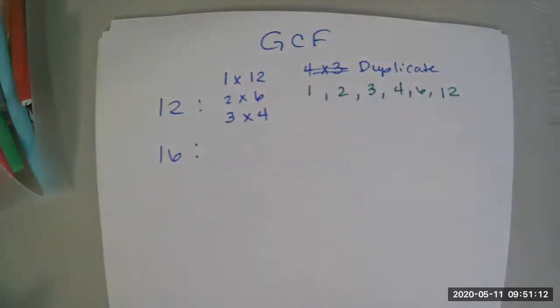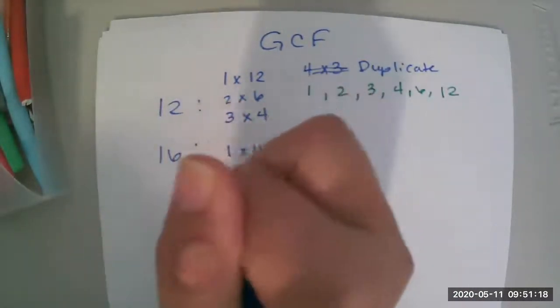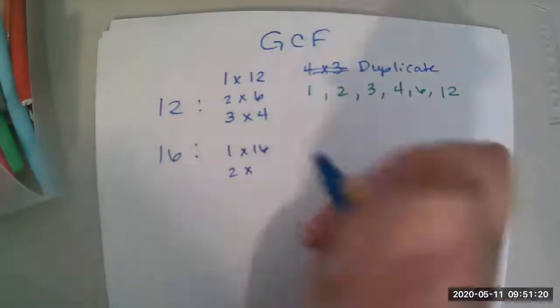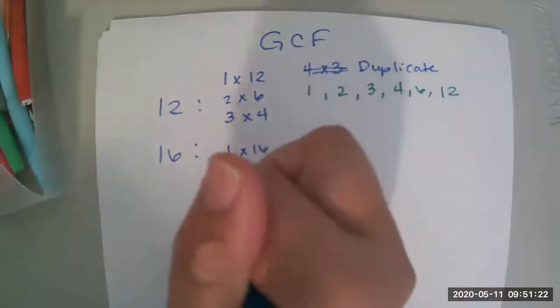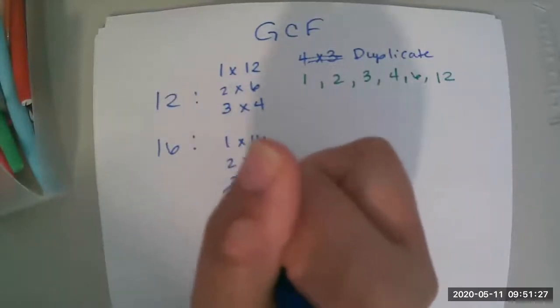We're going to do the same thing for 16 now. To make 16, I'm going to start at 1. 1 times 16. 2 times 8. Does 3 go into 16? No, it does not. How about 4? Yep, 4 times 4.